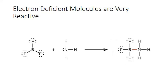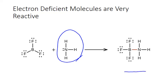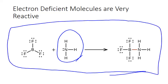Furthermore, the chemical reactivity of boron trifluoride matches what you'd expect for an electron-deficient molecule. Boron trifluoride reacts very quickly with molecules containing lone pair electrons — like the nitrogen on ammonia — forming a single bond so boron can gain its full set of eight. The fact that this reaction occurs so quickly confirms that boron is actually electron deficient in this molecule.